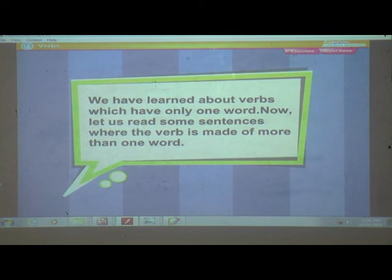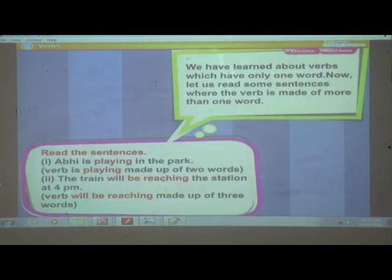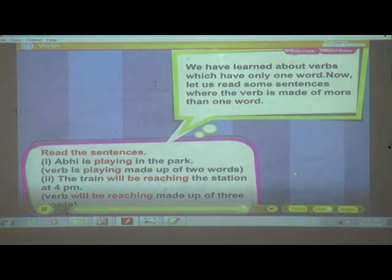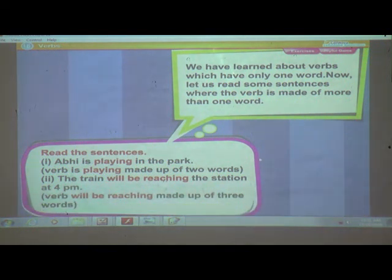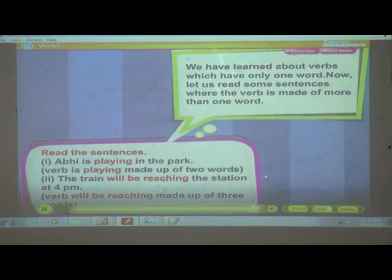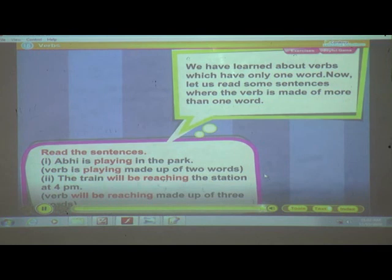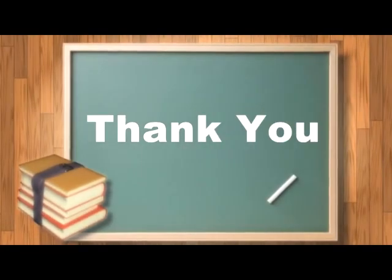We have learned about verbs which have only one word. Now let us read sentences where the verb is made of more than one word. 'Abhi is playing in the park' — the verb 'is playing' is made of two words. 'The train will be reaching the station at 4 p.m.' — the verb 'will be reaching' is made of three words. And in this way, we have finished today's lesson. Thank you. Have a good day.